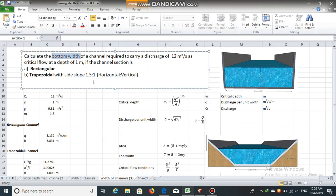Calculate the bottom width of a channel required to carry a discharge of 12 meter cube per second as critical flow at a depth of 1 meter. The channel section is rectangular in one case and trapezoidal with side slope 1.5 by 1 in the other case. We need to calculate the bottom width for both the rectangular and trapezoidal channel sections.